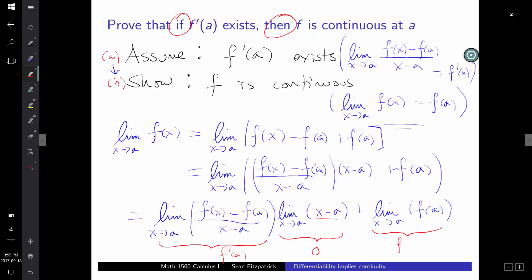And what can I say about the limits that I have here? This is F prime of A, and I know that because that was my assumption. What is this? This is a polynomial. I can just do direct substitution. I get A minus A. That's zero. F of A is a constant. So the limit of a constant is just a constant. So what do I get? I get something times zero, which is just zero, plus F of A. So I get F of A. And that's exactly what I needed to show.